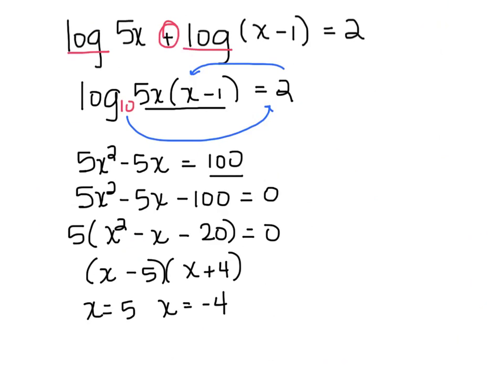Checking both solutions for extraneous: x equals 5 works, but x equals negative 4 gives us a non-real result because putting negative 4 in gives a negative argument inside a log — you can't take the log of a negative number. So negative 4 is extraneous and only x equals 5 is the solution.